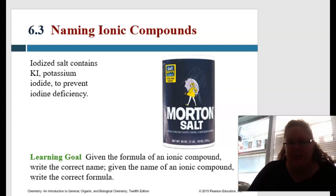Okay, so building on this, we are going to learn about naming ionic compounds. So again, we get to talk a lot about salt, but iodized salt contains KI, which is potassium iodide, and this prevents iodine deficiencies. Okay, so that would be like the goiter and stuff like that.